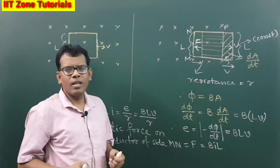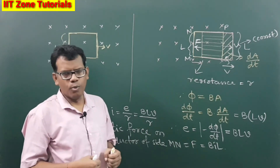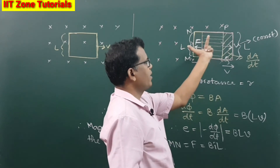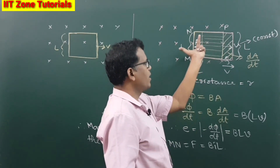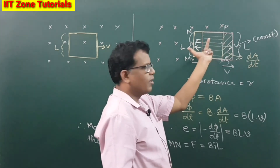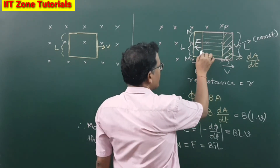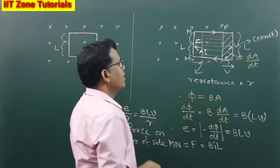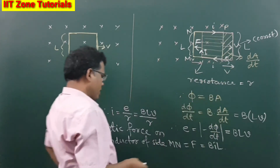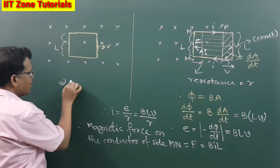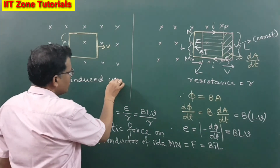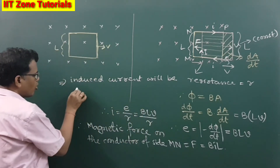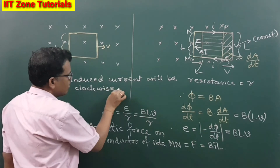The magnetic force on this part has to be backward in direction — that is the only way to resist the outward motion of the loop. According to Fleming's left-hand rule, if the force is in the backward direction in the presence of a magnetic field going inward, then the current in the MN part should be going in this direction. So the induced current will be clockwise in order.